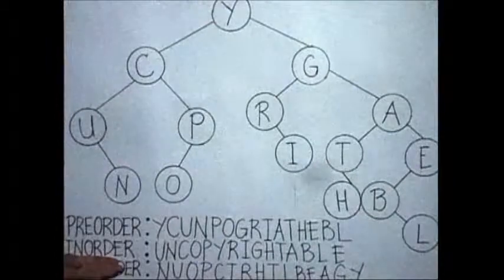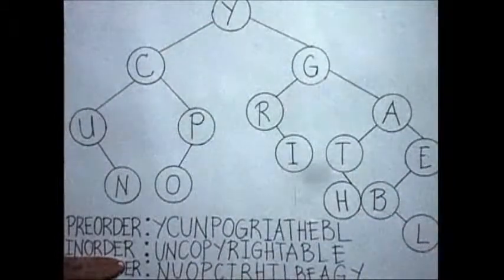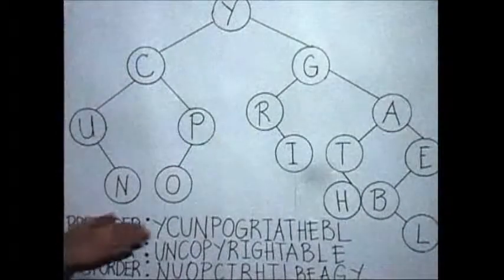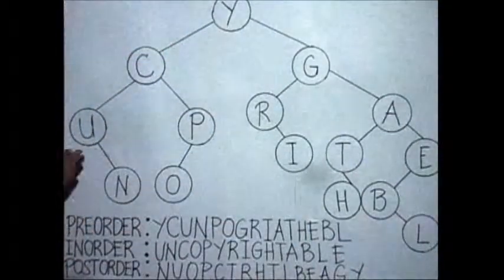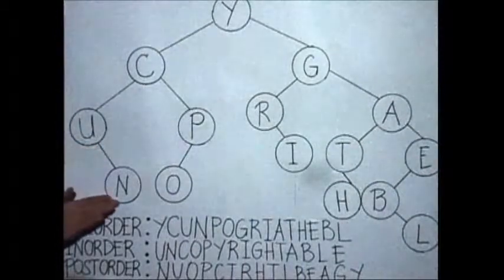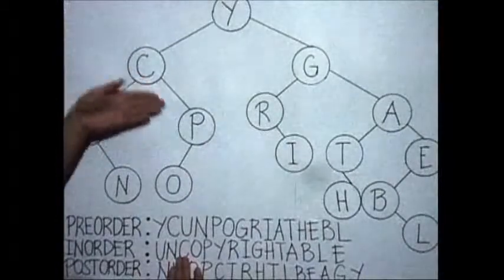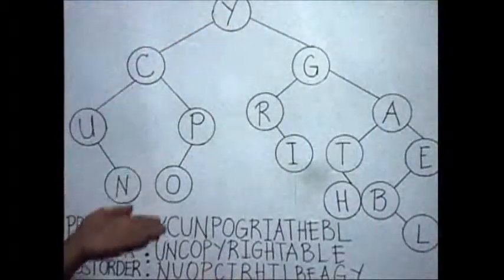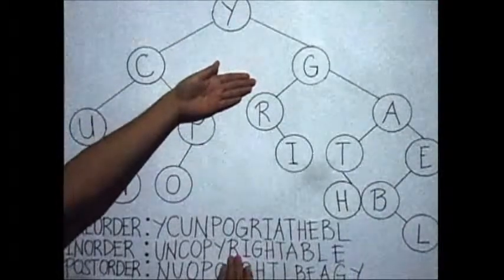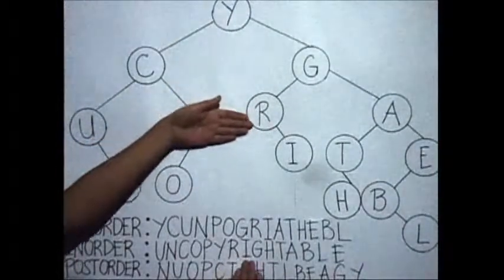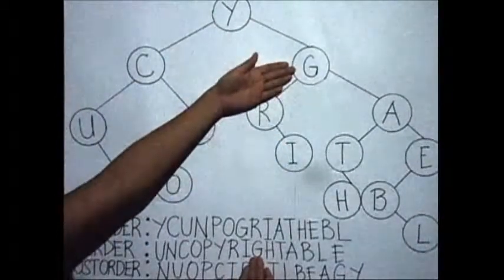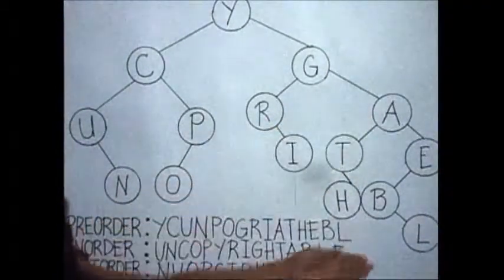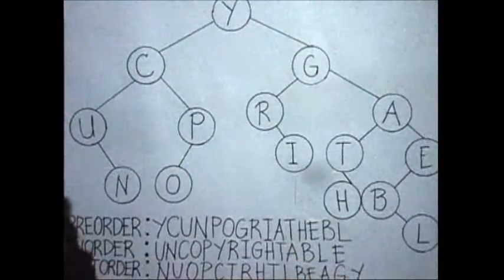Now let's go to the in-order traversal. For in-order traversal, the order is left child, root node, right child. We first visit the left sub-tree, then we visit the root node, and then its right sub-tree. We visit letter U, the left child, then letter N, then go to node letter C, then to letter O, and next to letter P, then the root node letter Y. We finish the nodes in the left sub-tree, so now we go to the nodes in the right sub-tree. We first go to the left child letter R, and the right child letter I, and node letter G. Next is letter H, followed by letter T, then node letter A, followed by letter B, next is letter L, and lastly node letter E.